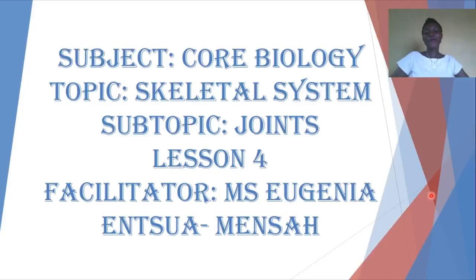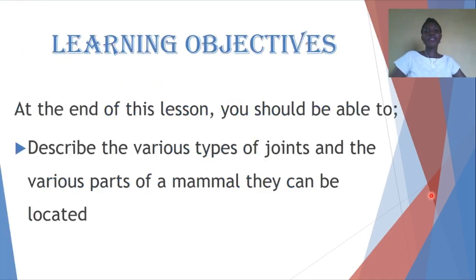Hello class, welcome to lesson four of the skeletal system. This is the final part of the skeletal system. Today we are going to look at joints. At the end of this lesson you should be able to describe the various types of joints and the various parts of a mammal where they can be located.